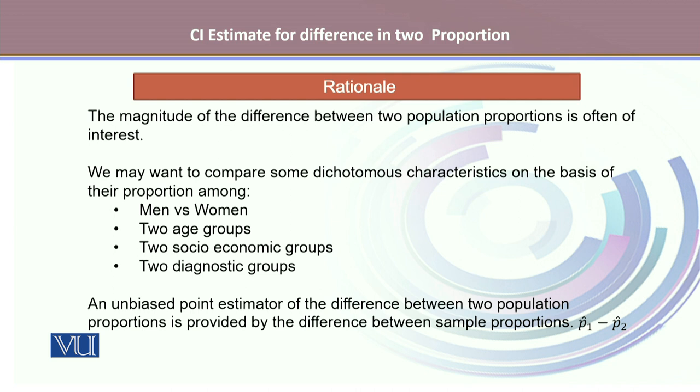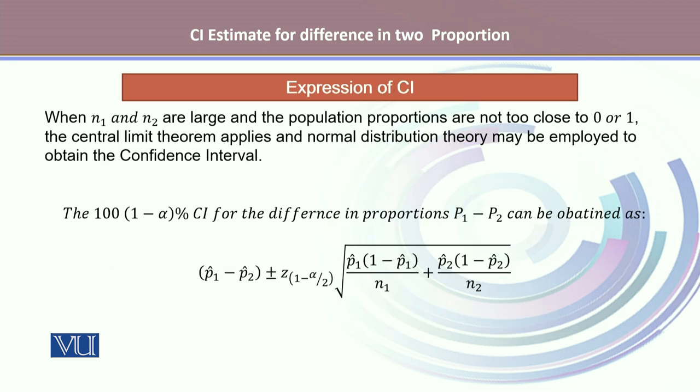Or two socioeconomic groups, or looking at dynamics for two diagnostic groups. An unbiased point estimator for the differences between two population proportions is provided by the difference between two sample proportions which are given by P₁ hat minus P₂ hat.